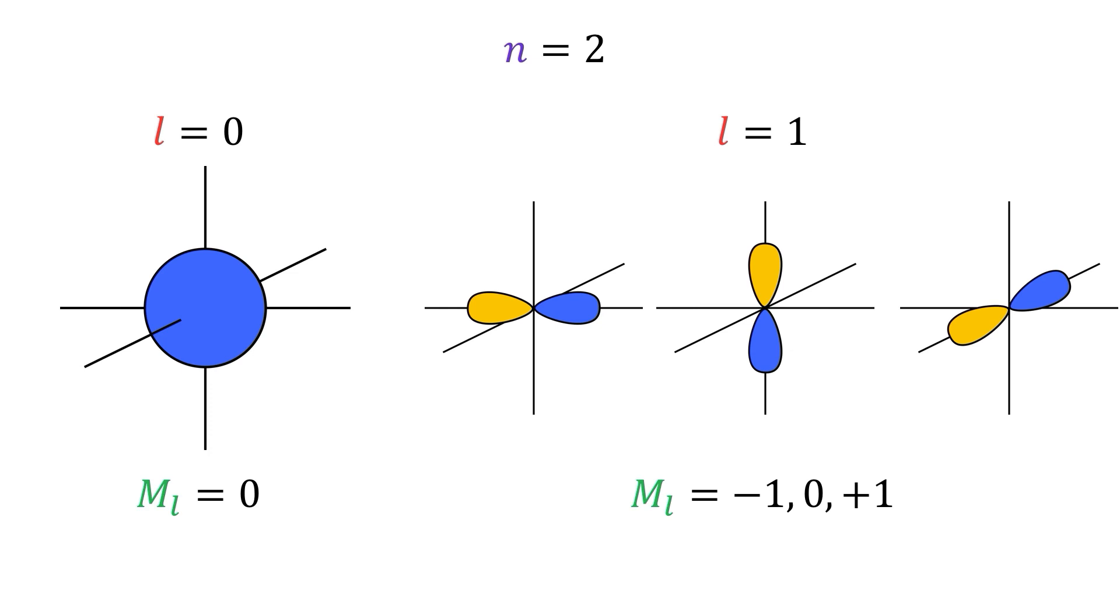When n is equal to 2, L can have values of 0 or 1. When L is equal to 0, it produces the 2s orbital, but when L is equal to 1, ML values can be minus 1, 0, or plus 1, which gives the two p orbitals.